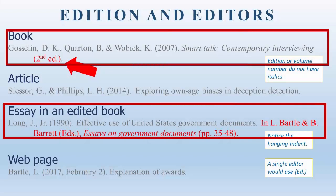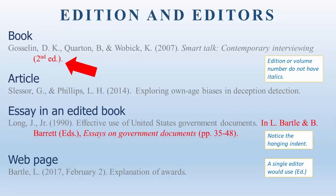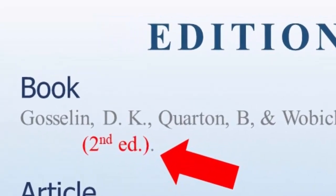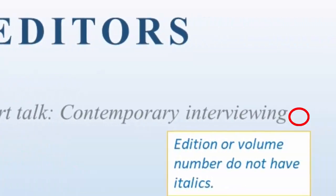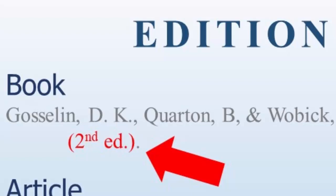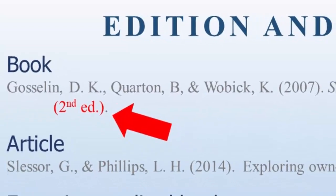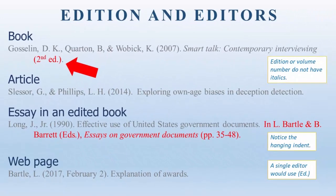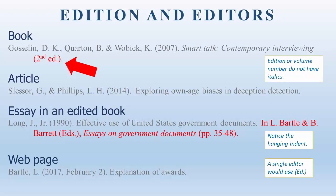Edition and editor notes apply only to books, or essays in edited books. Looking at the book example, you can see the edition note follows the title and it is wrapped in parentheses. The superscript of the 'nd' following the number is acceptable, as is the 'nd' without superscripting. That is followed by a lowercase 'ed' and a period. After you close the parentheses, notice that the period following the title of the book was removed and replaced to end this section. There are other kinds of edition notes, such as revised and new revised, but the most common is the numeral. If you don't see an edition statement on the item, it is probably a first edition, and you don't include the edition note for a first edition. Notice also the edition note is not in italics.